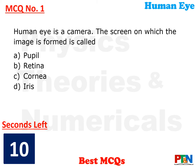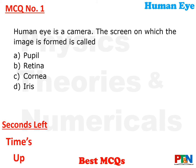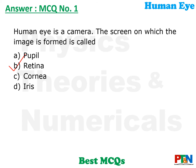MCQ number 1. The human eye is a camera. The screen on which the image is formed is called — 4 options, 10 seconds time for you. The answer is retina. The image is formed on the retina.